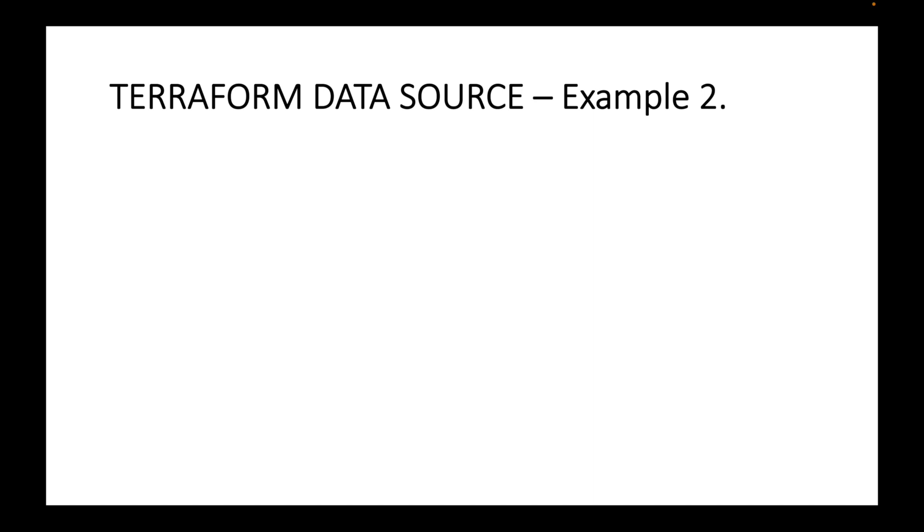In this session we will look at another example of the Terraform data source block — how we can use it to fetch information about existing resources so that we can use that information to create new resources. In the last session we looked at a first example where we used the data source block to fetch VPC information already created on the AWS platform, then used it to create a security group and launch EC2 instances.